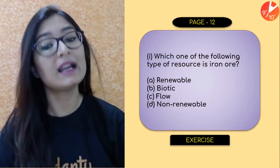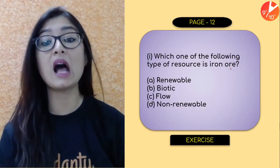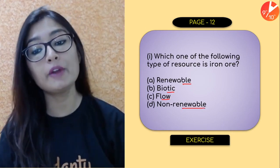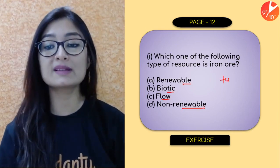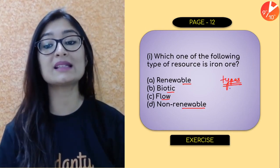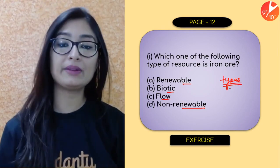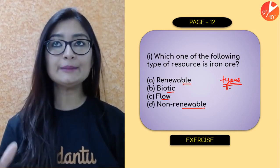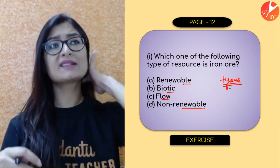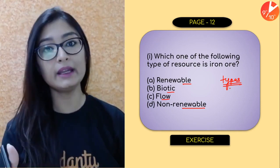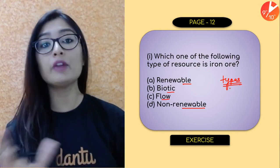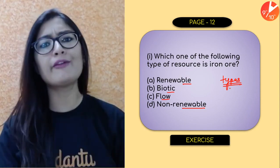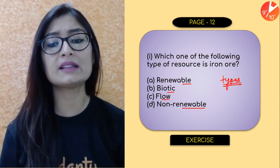The next question: Which of the following types of resources is iron ore — renewable, biotic, flow, or non-renewable? Let's recall the types: renewable resources have no exhaust, like solar energy. Non-renewable resources get exhausted and take a long time to form. Flow resources relate to continuous natural flows. Biotic resources are related to life.